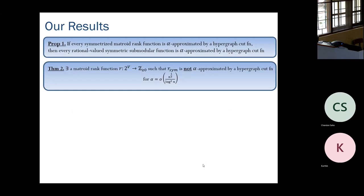We observed this proposition early and spent a long time trying to approximate symmetrized matroid rank functions. Until we realized that constant approximation is not possible. There exist matroid rank functions whose symmetrizations are not alpha-approximated by any hypergraph cut function for any alpha less than n^{1/3} / log² n. This is a fairly strong negative result.